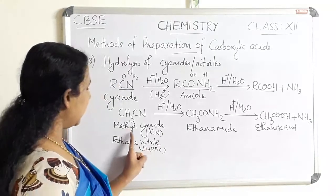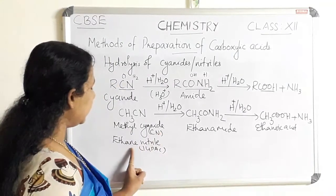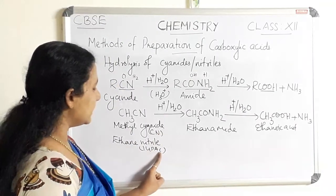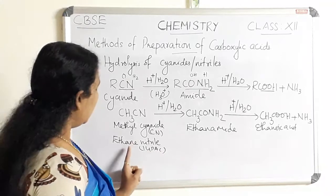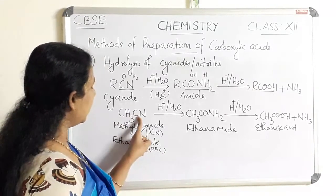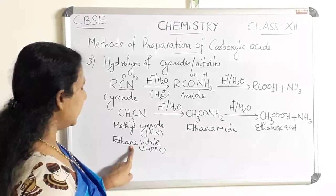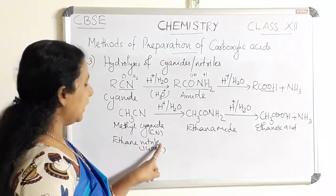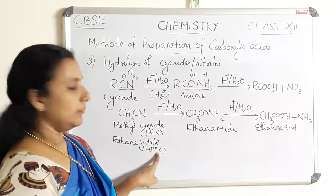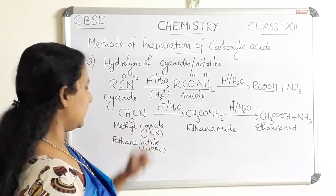Methyl cyanide is the common name and ethanenitrile is the IUPAC name. The name 'ethane' comes from the two carbon atoms present — the parent alkane is ethane — and then nitrile is added. That is how we name cyanides using IUPAC nomenclature.